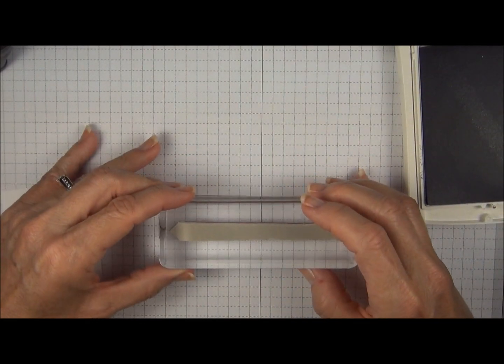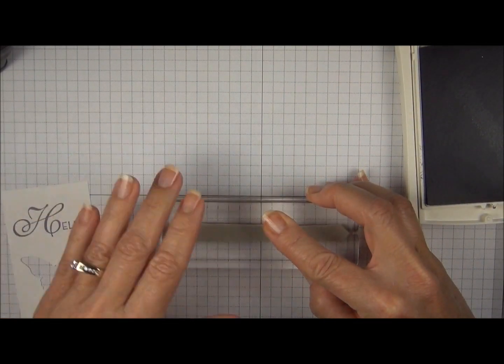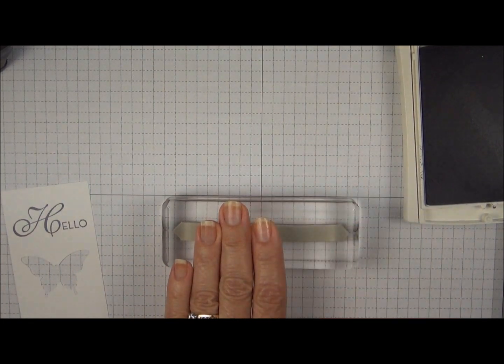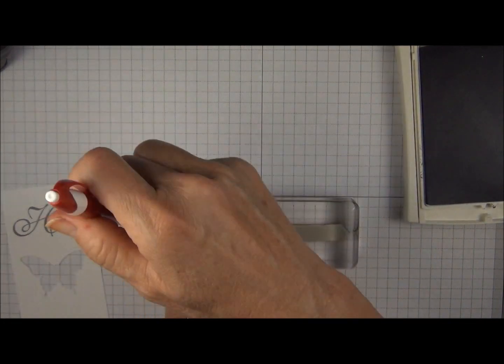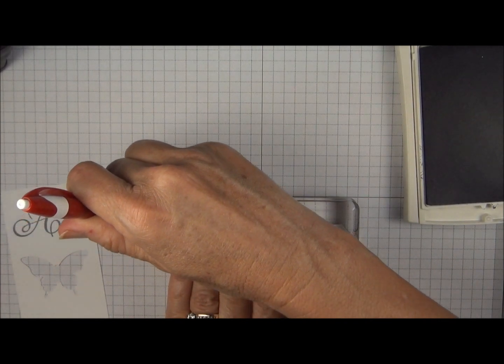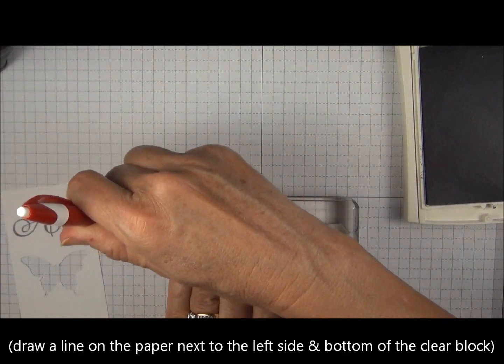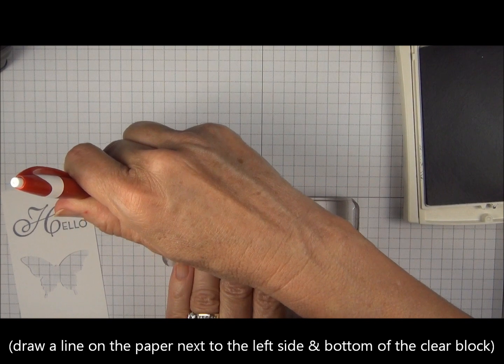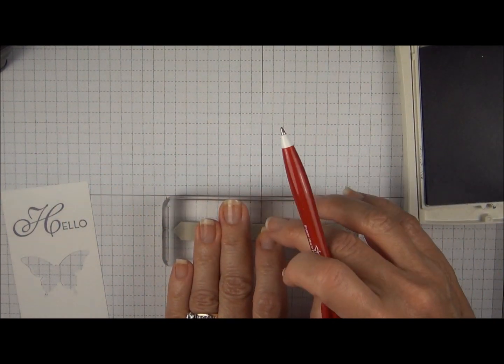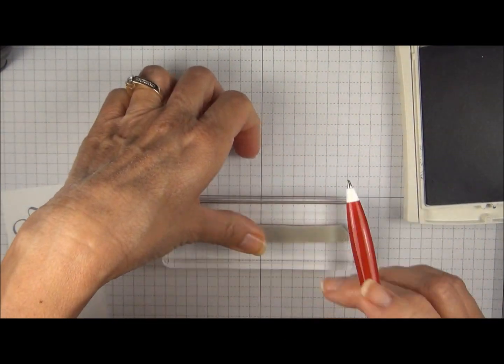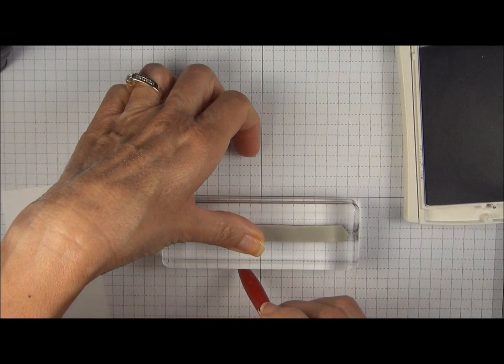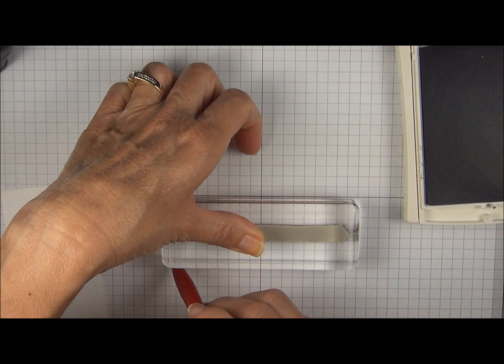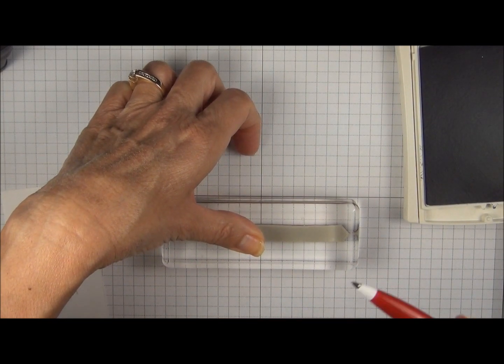I'm going to stamp it on my grid paper first. Now before I lift it up, I'm going to mark this line here where I lined up the left side of the block. And then I'm going to mark the bottom of the block. I'm kind of creating a stamp-a-ma-jig without a stamp-a-ma-jig.